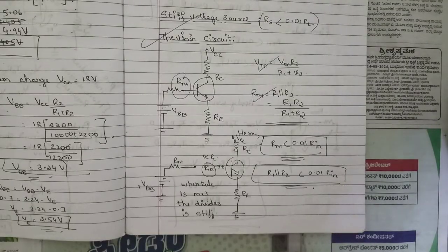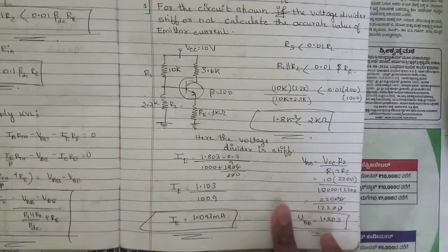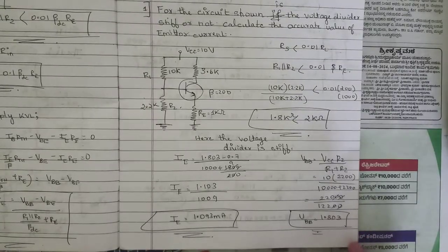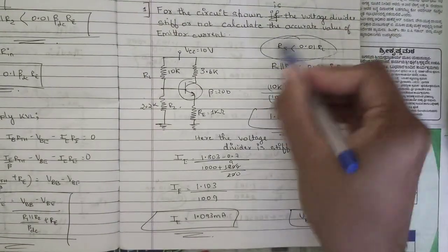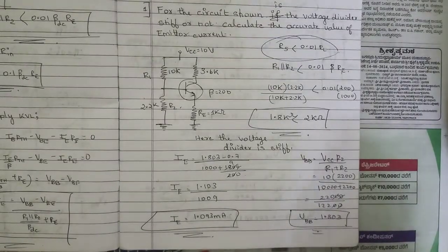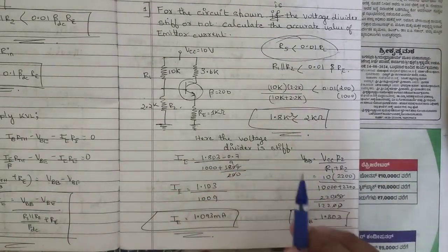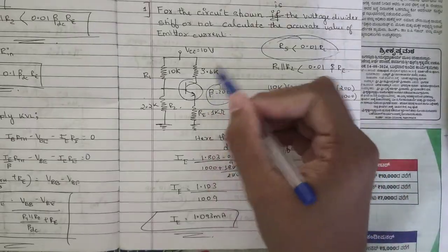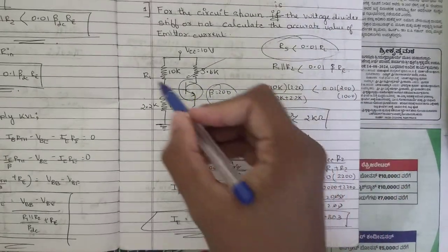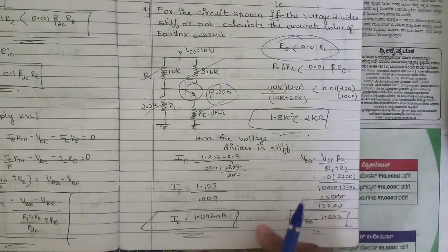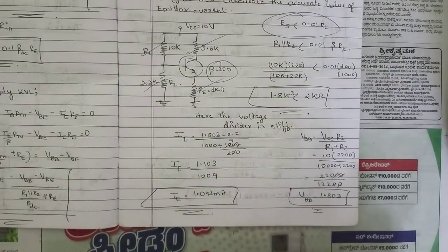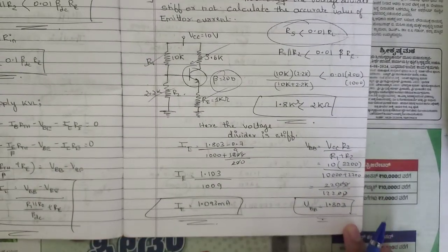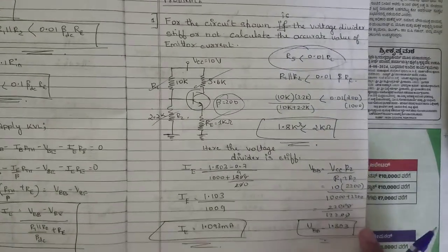One problem related to the voltage divider bias circuit would be fixed/asked. With the given Thevenin condition applied, the voltage divider bias circuit problem involves the amplification factor, collector resistance, emitter resistance, and R1 and R2 values being given, and you should find all necessary terms of the voltage divider bias circuit.